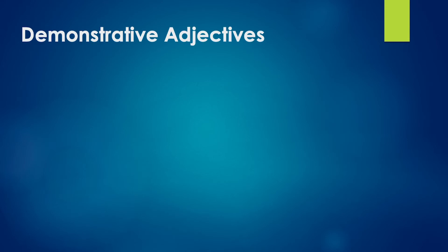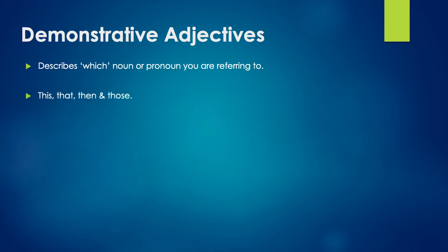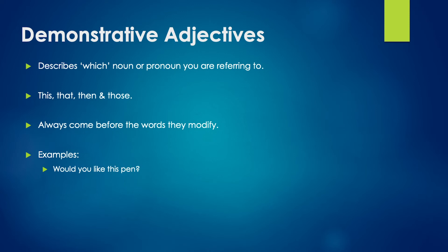A demonstrative adjective describes which noun or pronoun you are referring to. Demonstrative adjectives include words like this, that, these, and those. Demonstrative adjectives always come before the word they are modifying. For example, would you like this pen? — this is the demonstrative adjective. That room is decorated beautifully — that refers to a singular noun that is far away from the speaker, and it is a demonstrative adjective.